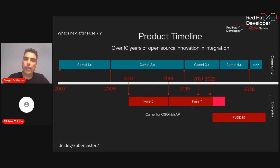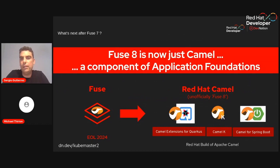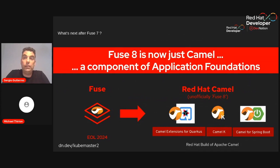So what happened with Fuse 8? Fuse 8 was rebranded to Camel 3 — specifically the Red Hat build of Apache Camel 3. The main reason is that the upstream project Apache Camel 3 is very popular and we need to leverage that popularity. Apache Camel, in terms of contributions, is the most popular integration framework in the open source community.